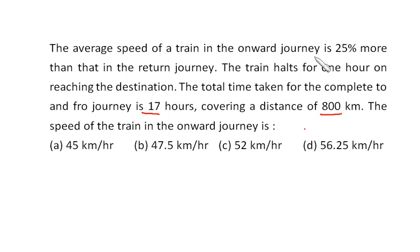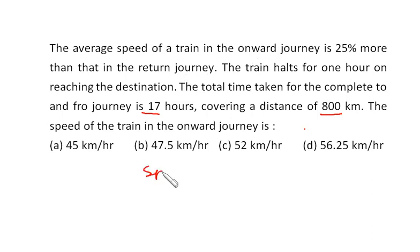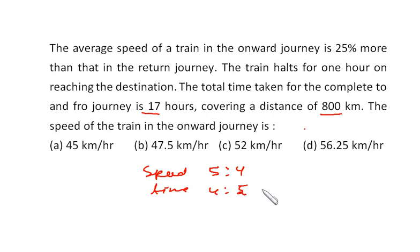The speed in the onward journey is 25% more than the return journey. That means it is 125% of the return journey. And 125% is 5 by 4. That means the speed ratio of onward to return is 5:4, and the timing ratio will be 4:5.